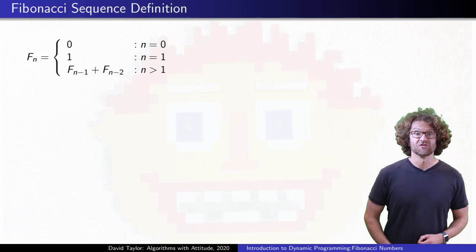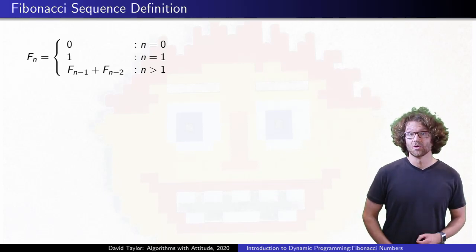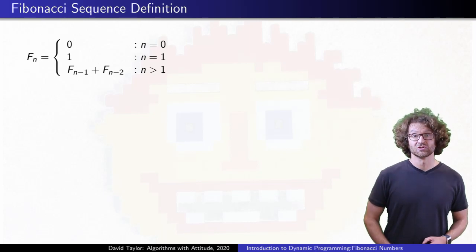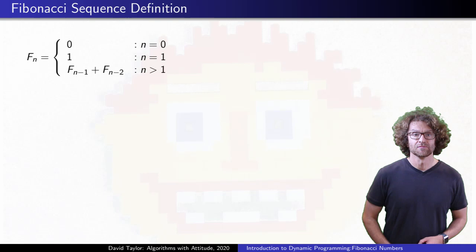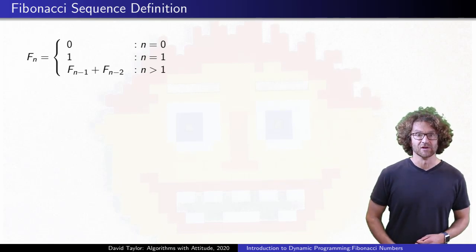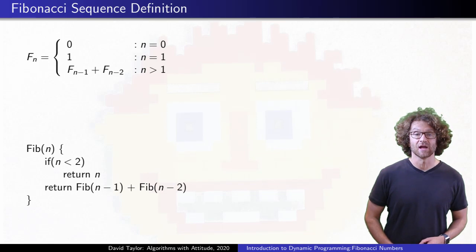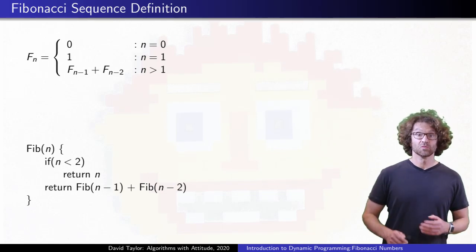The Fibonacci sequence is defined recursively. The zeroth number is 0, the first number is 1, and for all integers larger than 1, it's the sum of the two previous numbers. Not surprisingly, with that definition, we can write a simple recursive program to calculate the ith Fibonacci number, and it works.